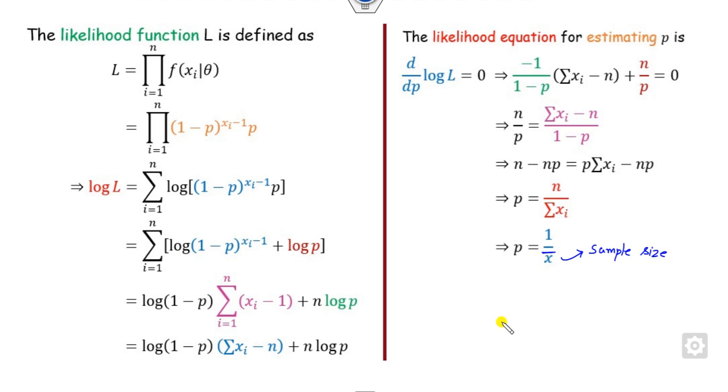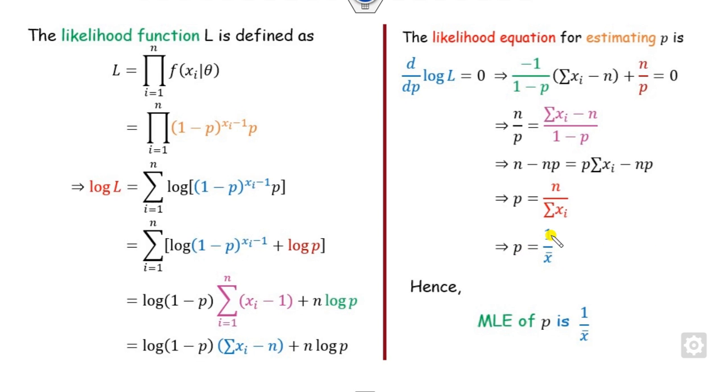If you have the sample elements, whatever the mean of them, the reciprocal of that is the probability. Hence, the maximum likelihood estimator for the geometric distribution parameter P is 1 over the sample mean.